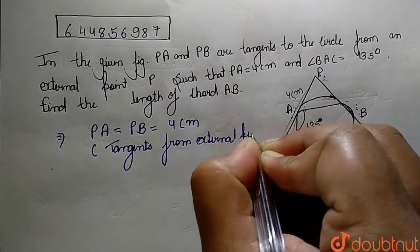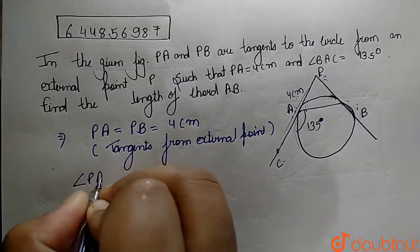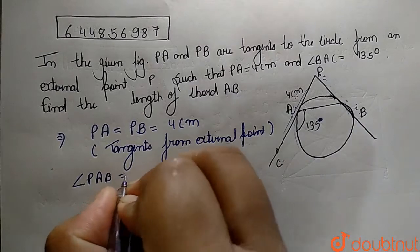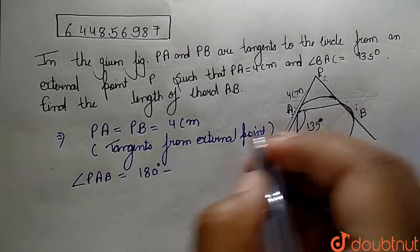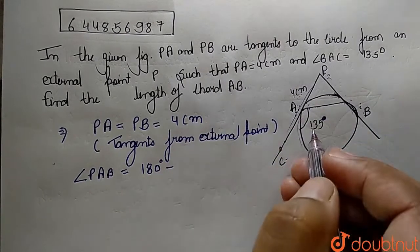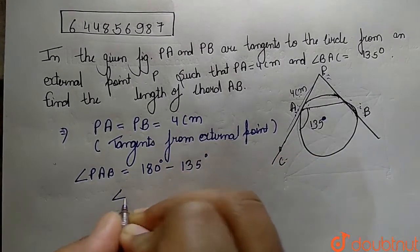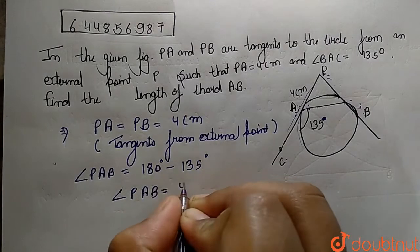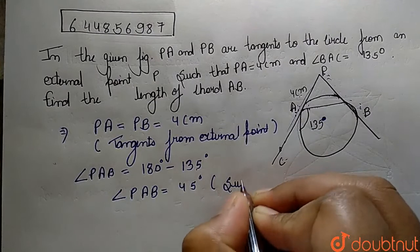Now, angle PAB will be equals to 180 minus angle BAC. Since angle BAC is 135 degrees, angle PAB equals 180 minus 135, which gives us 45 degrees. This is because they are supplementary angles.